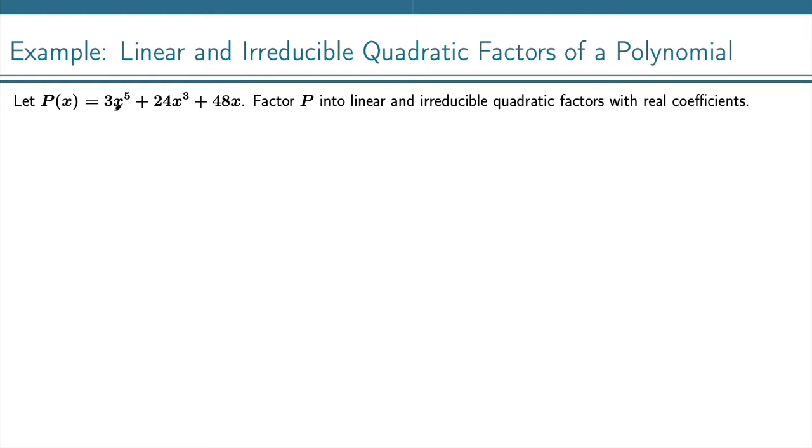Let P(x) equal 3x to the fifth plus 24x cubed plus 48x. Factor P into linear and irreducible quadratic factors with real coefficients.